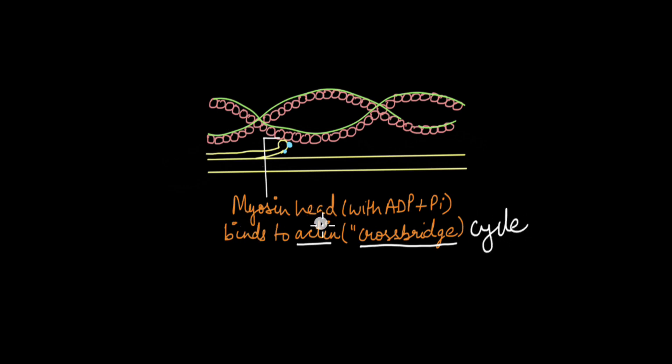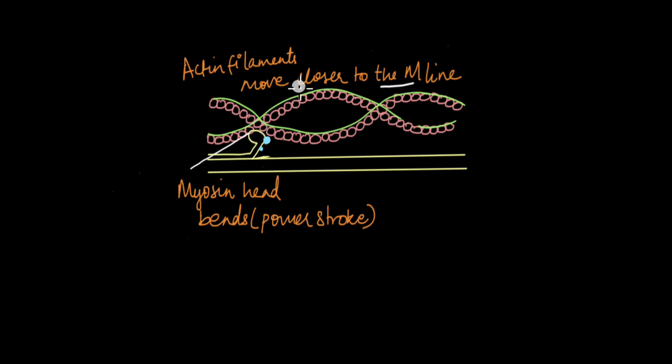So now with the myosin head attached to actin, this myosin moves this way. Basically it moves to the left or to the right, wherever it is oriented. And when it does that, it pulls the actin closer to the M line. So the myosin head was originally attached here somewhere, right? And it has moved this way and it has pulled the actin filaments.